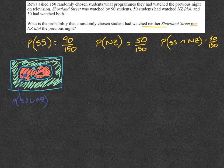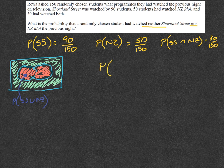So basically what you're wanting to do is find the probability of the Union between Shortland Street and New Zealand Idol and then subtract one from it, and that will tell you the probability.